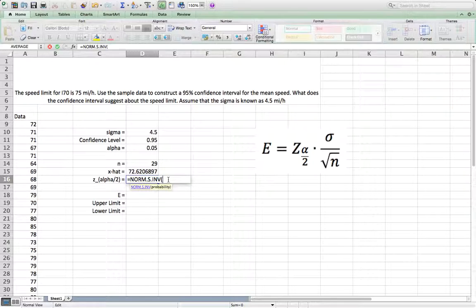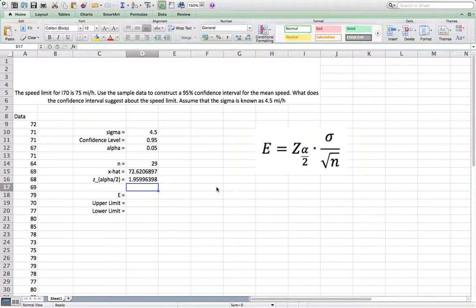But you need to give a probability. Probability is 1 minus alpha over 2. Alpha is in D12. Alpha over 2 is D12 divided by 2. So you calculate this. You got the z score is 1.96. So now we calculate the margin of error by using this formula.